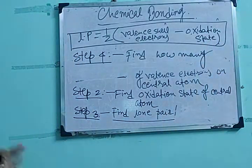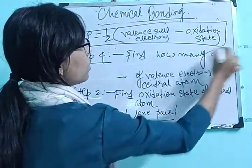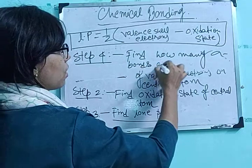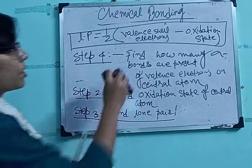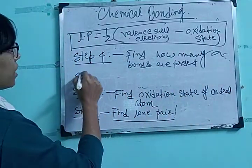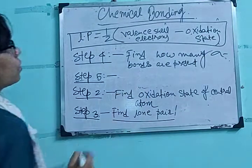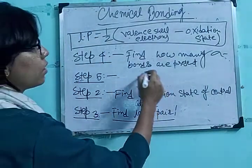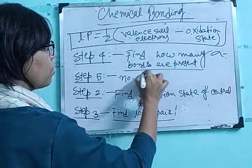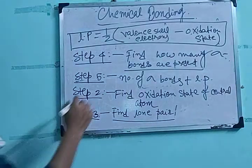During the application of this rule to find the shape, you will only count sigma bonds. Don't consider pi bonds. Step 5 is: sum up the number of sigma bonds and the number of lone pairs. We get a final number from this summation.